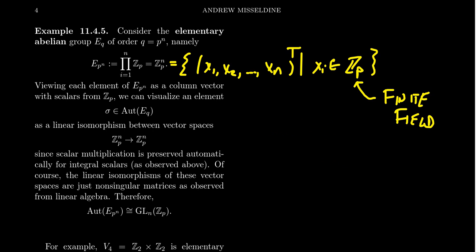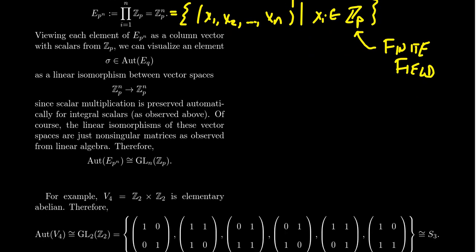Every elementary abelian group can be viewed as a finite vector space over a finite field, and the group homomorphisms are exactly linear transformations. In particular, the linear endomorphisms are just the group endomorphisms. The linear isomorphisms — bijective linear transformations — are identical to the group automorphisms. Therefore, we can describe the automorphism group of an elementary abelian group using the general linear group: Aut(E_{p^n}) ≅ GL(n, ZP), the group of n×n non-singular matrices with scalars from ZP.